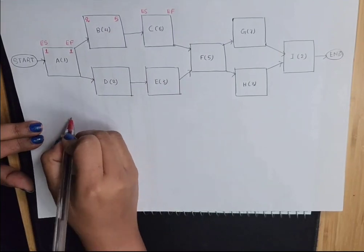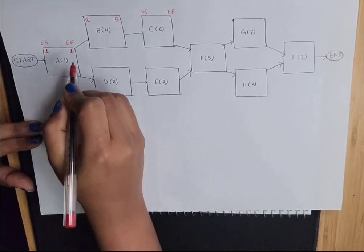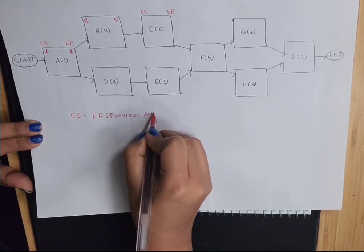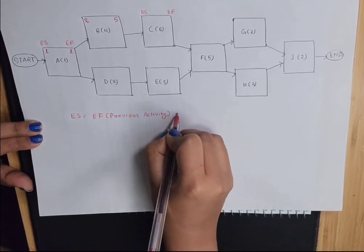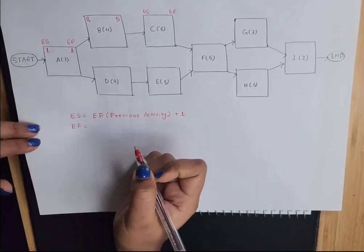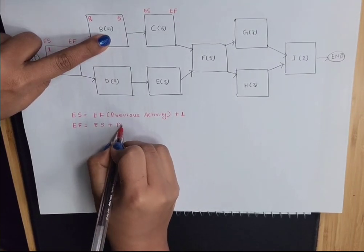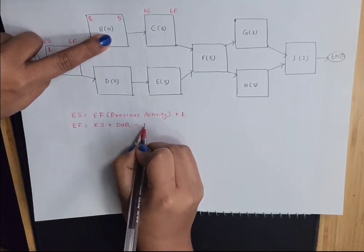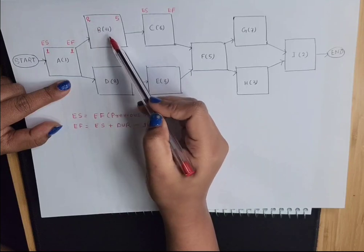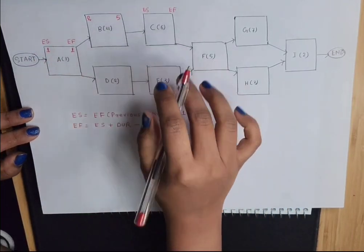Here you can see the formula. To calculate the early start, we look at the early finish of the previous activity and add one to it. To calculate early finish, we take the early start of that activity plus the duration minus one. For activity B: early start is 2, duration is 4, so 2 plus 4 minus 1 equals 5. It takes 4 days to complete, which gives us days 2, 3, 4, 5.